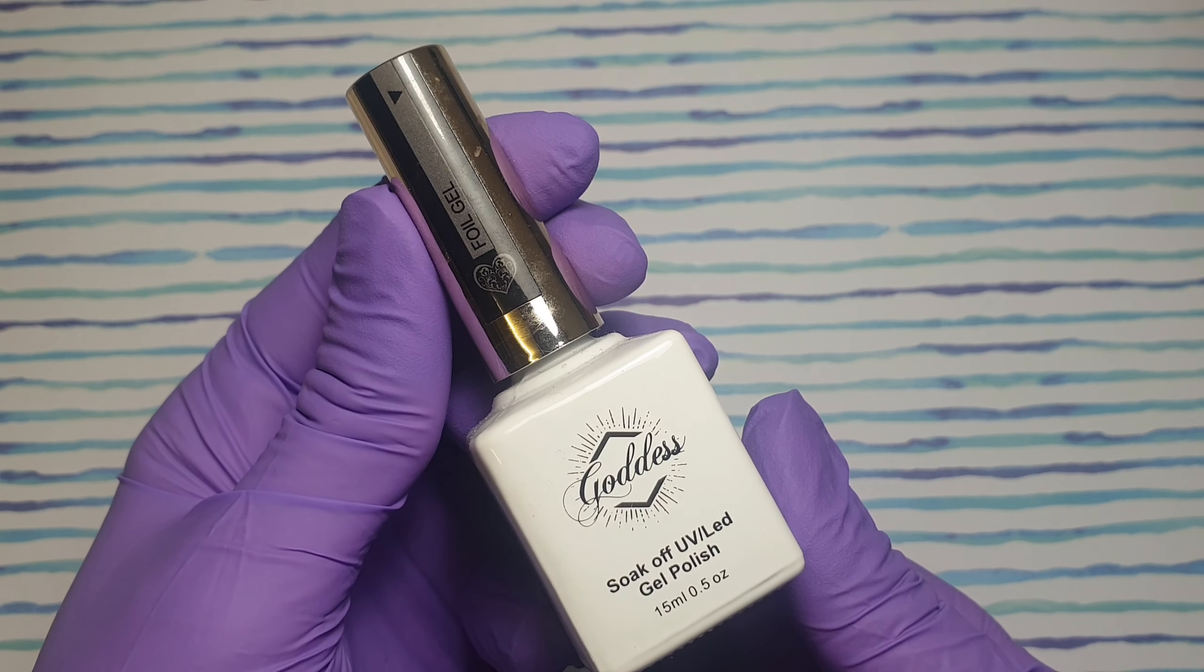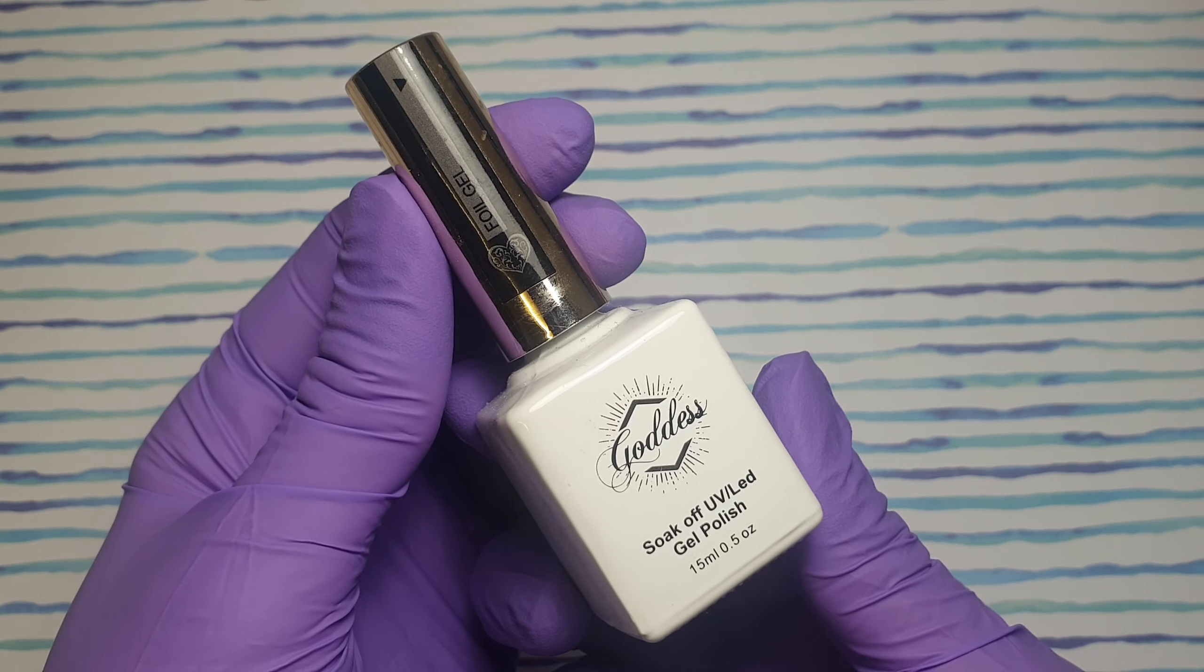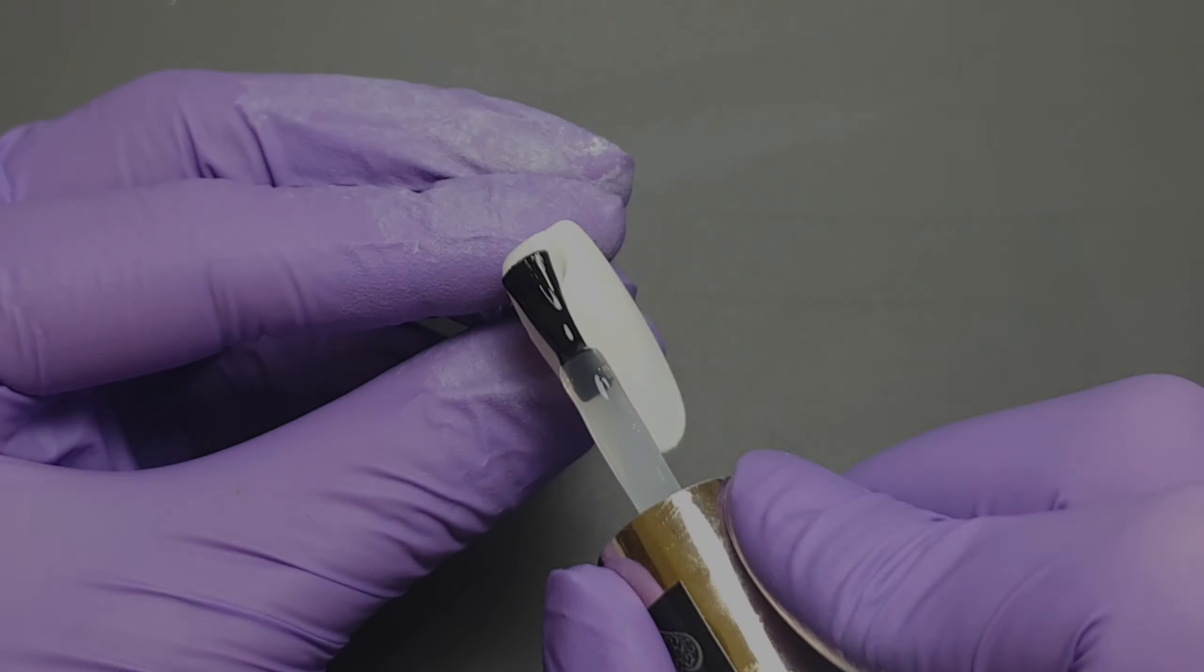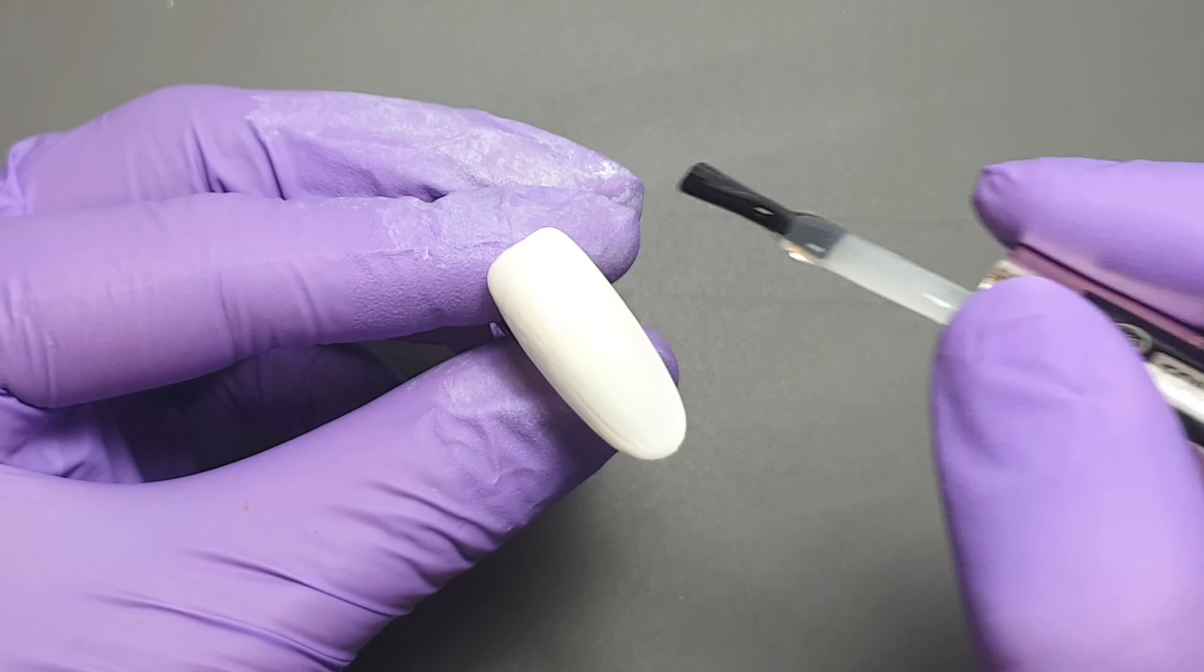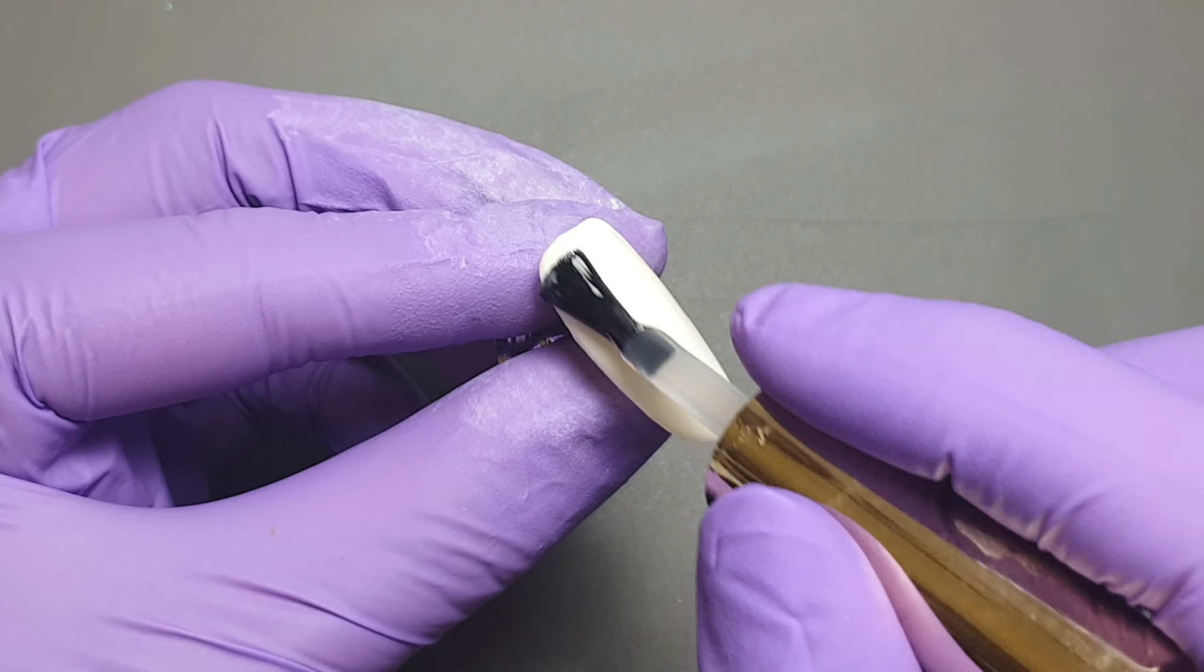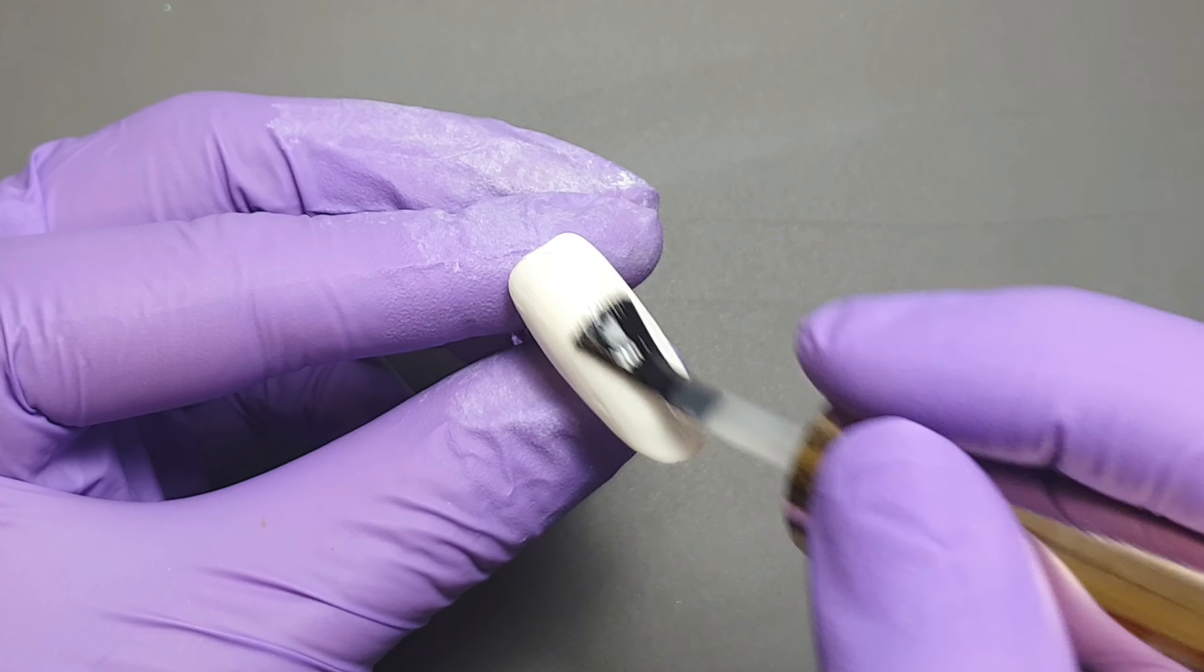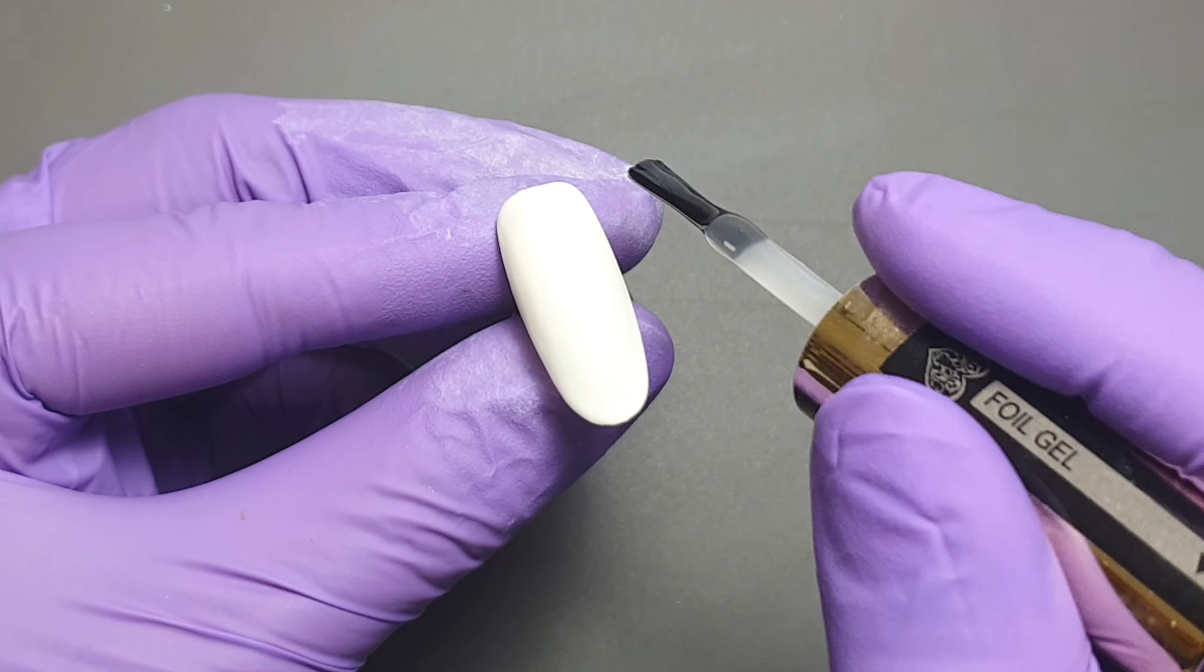Then I'm going to come in with my Nirvana Nail Supplies Goddess Foil Gel. This is my go-to foil gel, I absolutely love it. I'm just going to apply a thin layer of this to the entire nail. This is quite sticky even when it's uncured, so I like to just go over it a few times to make sure it's nice and smooth, and then I will pop that in to cure for 30 seconds.